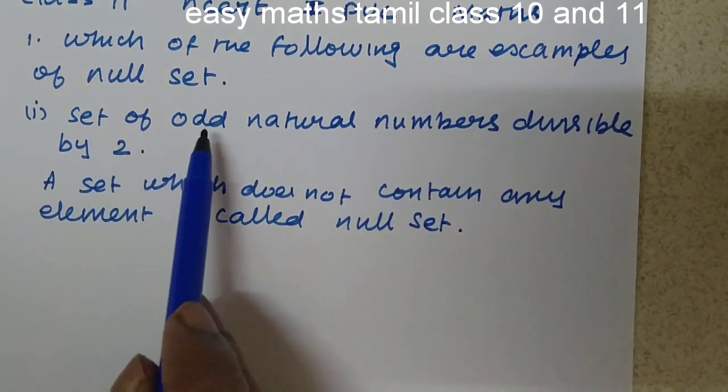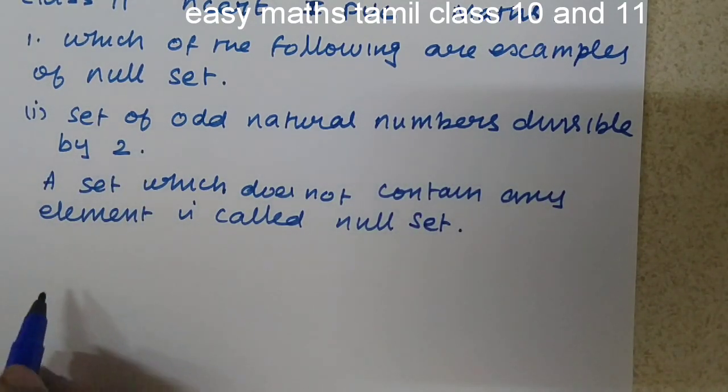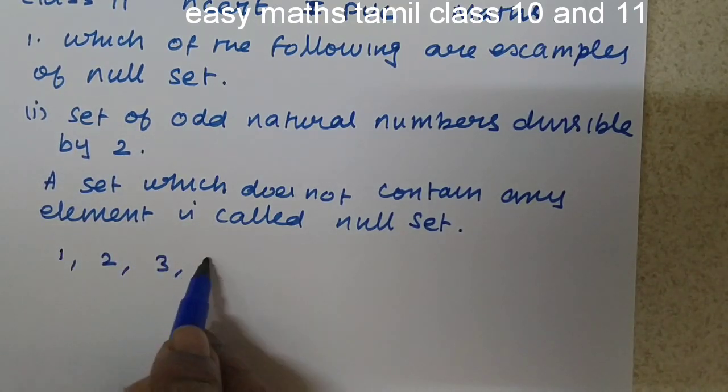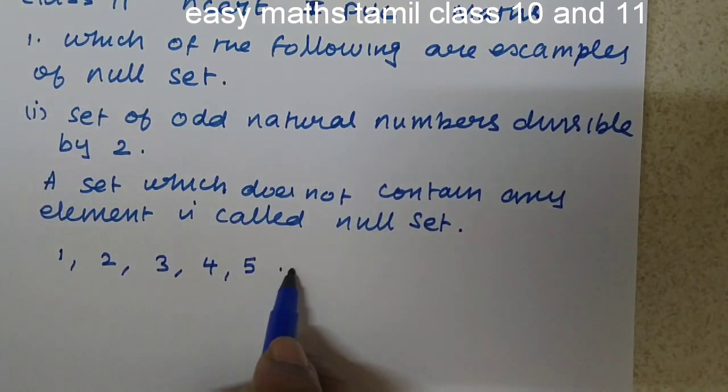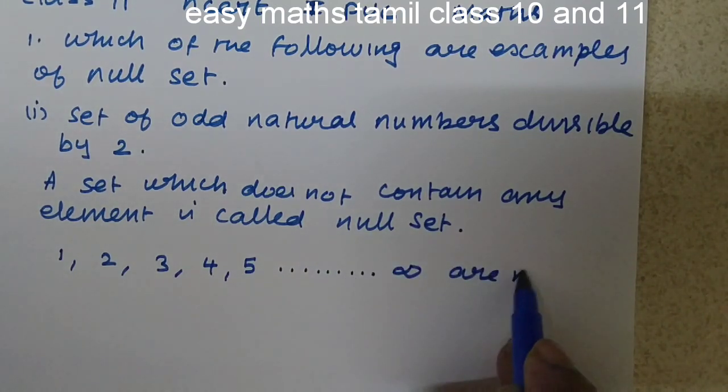Set of odd natural numbers divisible by 2. What are natural numbers? 1, 2, 3, 4, 5, 6... These are natural numbers. Now, odd natural numbers.